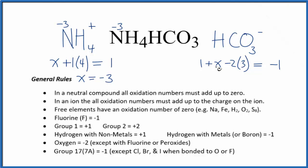So 1 plus X, and then we have minus 6. So 1 and minus 6 is minus 5. Let's add 5 to both sides.